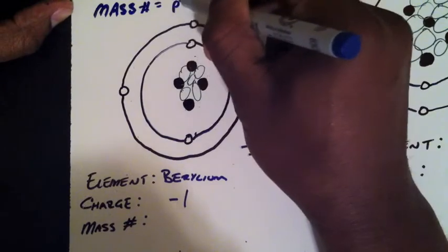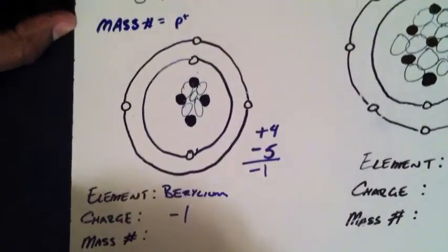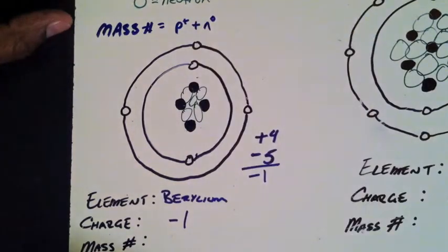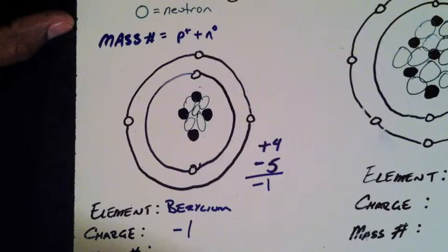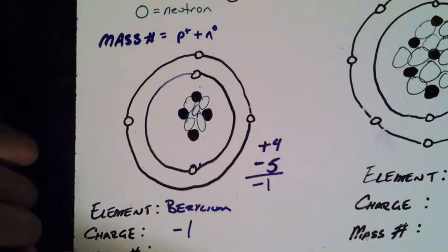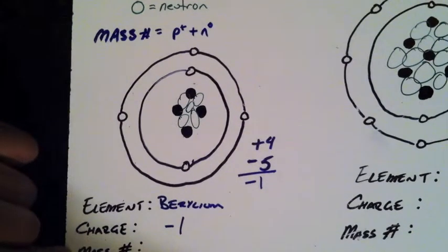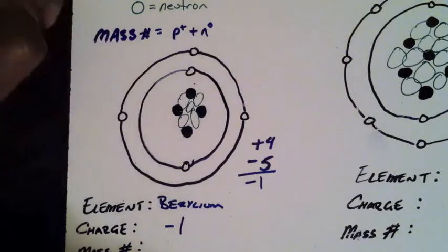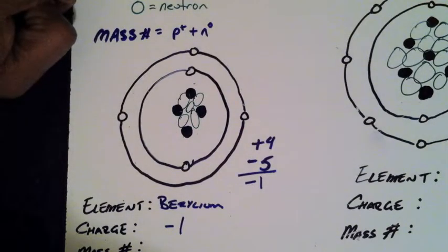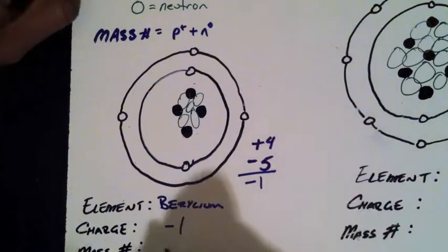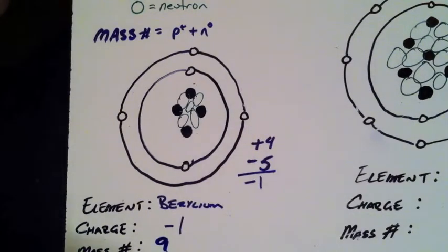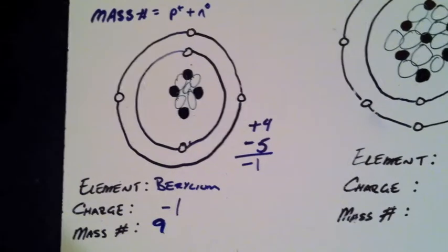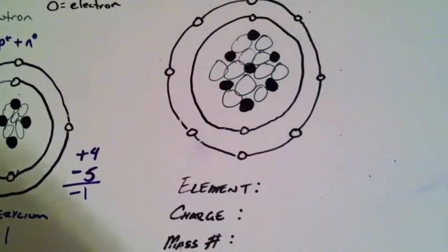Mass number is equal to protons plus neutrons — protons are represented with a P+ and neutrons have no charge. To get my mass number I count the number of protons, which is four, and then I count my neutrons: one, two, three, four, five — five neutrons. Four plus five equals nine, so I have a mass number of nine.